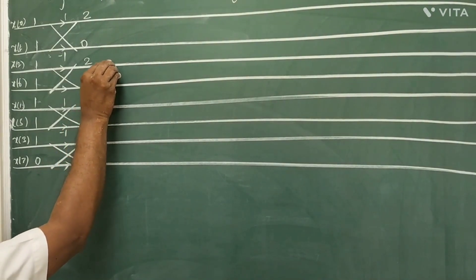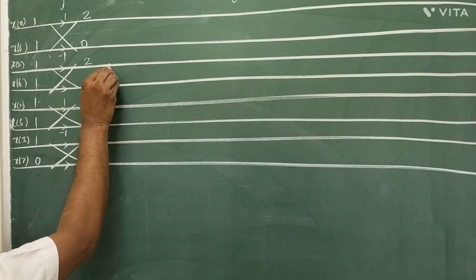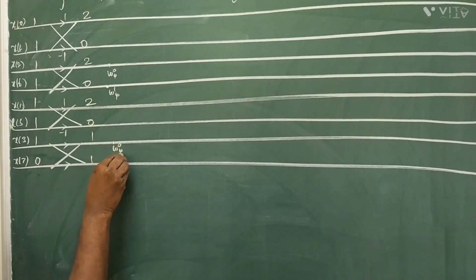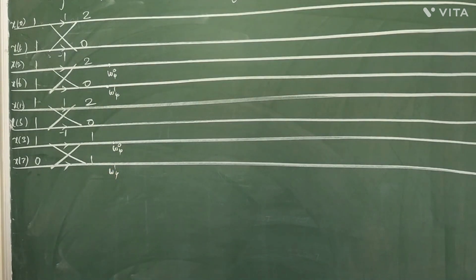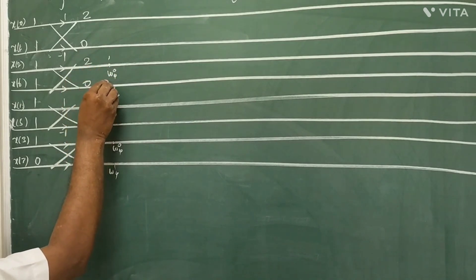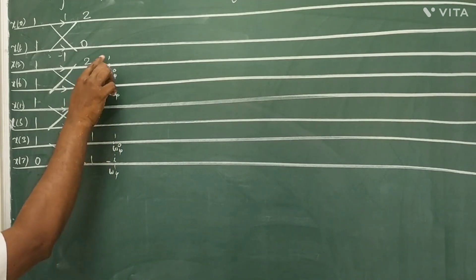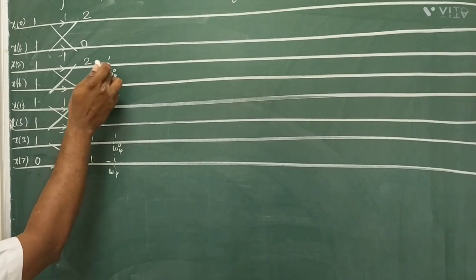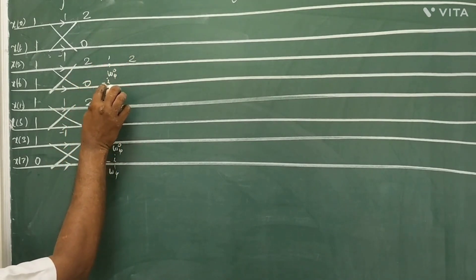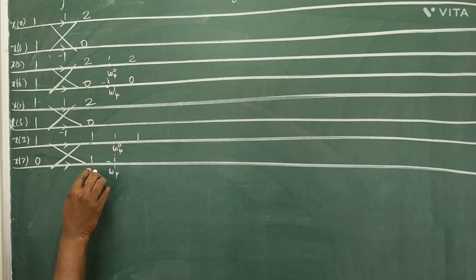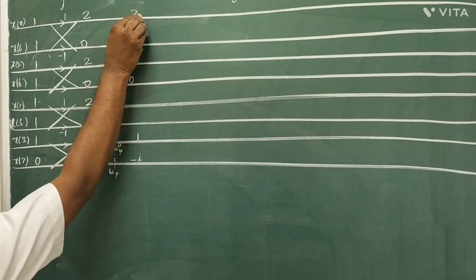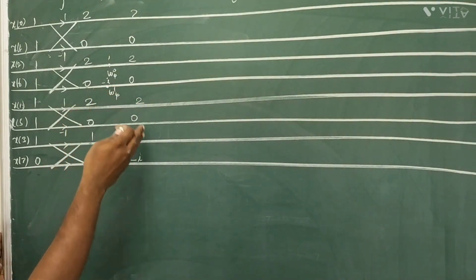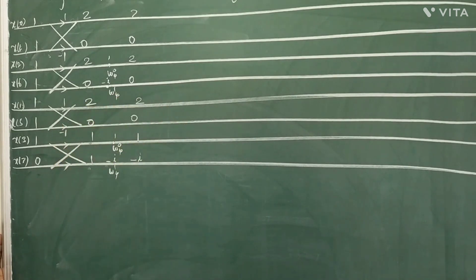For Stage 2, the twiddle factor values are W₄⁰=1 and W₄¹=-j. In Stage 2 there are two butterflies, using alternate lines. Multiply by the twiddle factor on the lower end: 2×1=2, 0×(-j)=0; 1×1=1, 1×(-j)=-j. So the Stage 2 inputs are: 2, 1, 0, and the remaining outputs from Stage 1.